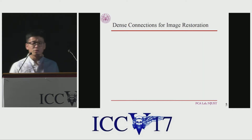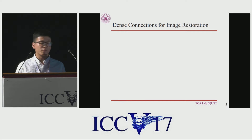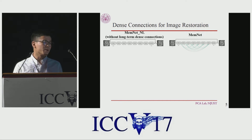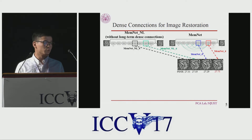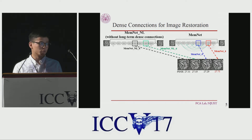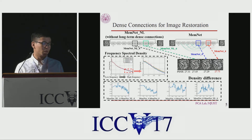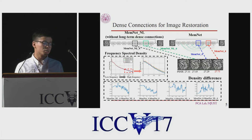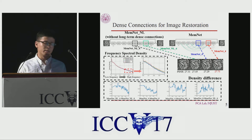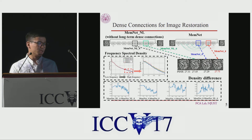We analyze why dense connections are helpful for image restoration. We compare our memory network with a version without long-term dense connections, and we get the recovered outputs of two memory blocks from both models. We then plot their frequency spectrum densities respectively. From the density difference of corresponding memory blocks, we conclude that with dense connections, the latter layers can absorb information carried from the previous layers and hence recover more high-frequency signals.